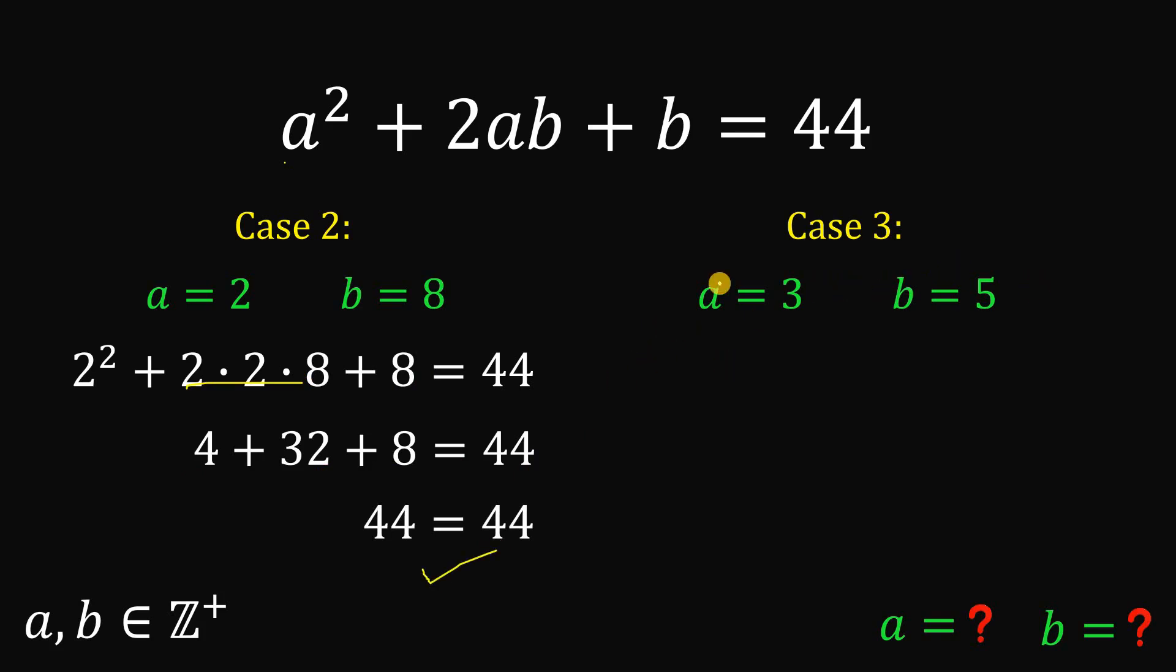Now how about the second case, rather the third case? Let's replace all a with 3 and all b with 5. So we have here 9 plus 30 plus 5. And 9 plus 30 plus 5 simply equivalent to 44. And this is also correct.